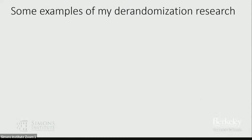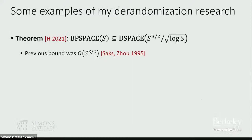To give examples from my own research: today the state-of-the-art de-randomization of BPSpace S says that if you have a randomized algorithm using S bits of space, we can simulate it deterministically using O of S to the three-halves over square root log S bits of space. This is just barely better than what was proven back in the 90s, but the main point is that it's non-trivial — we can actually prove some type of unconditional de-randomization.